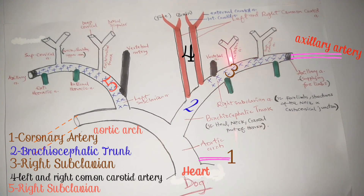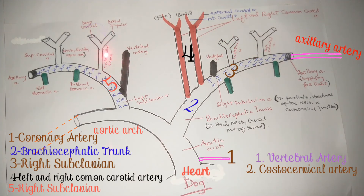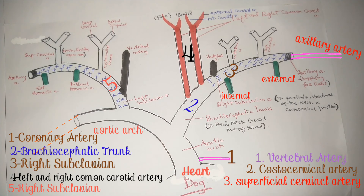The structures that emanate from the right subclavian artery have similar counterparts in the left subclavian artery. The first branch of the subclavian artery is the vertebral artery — right vertebral artery on one side, left vertebral artery on the other. We also have the costal cervical artery, the superficial cervical artery, the internal thoracic artery, and the external thoracic artery — all present bilaterally.